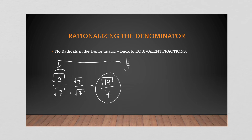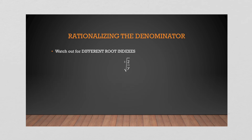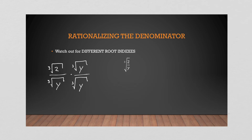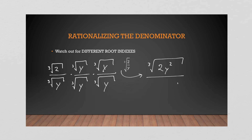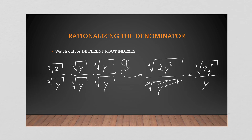This is exactly the same value — it just doesn't have an irrational number in the denominator. It gets more complicated with a higher root index. For example, the cube root of two over the cube root of y: if you just multiply by the cube root of y, you don't have enough factors because you need three y's. So with a cube root you need to multiply twice more. That gives you the cube root of two y squared over the cube root of y cubed, which is perfect because y cubed cancels, leaving the cube root of two y squared over y. Be careful — as the root index increases, you may need to multiply by more factors.